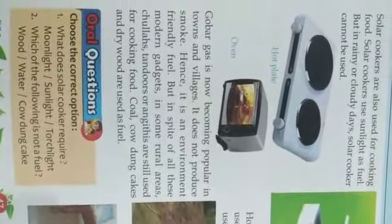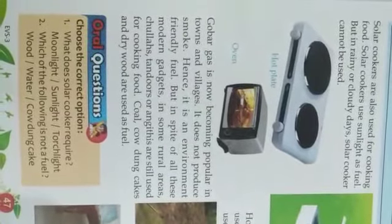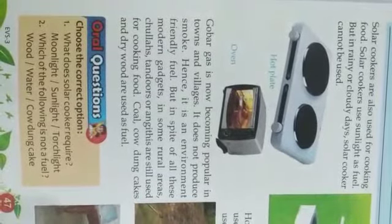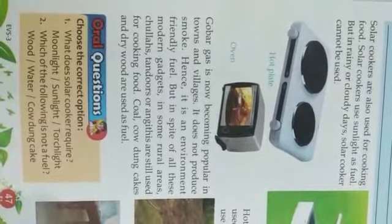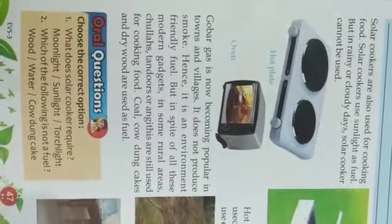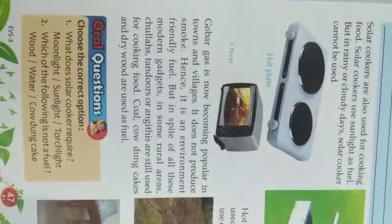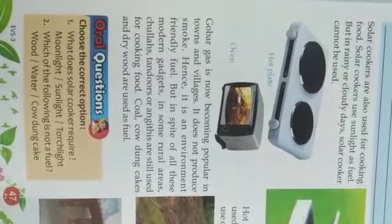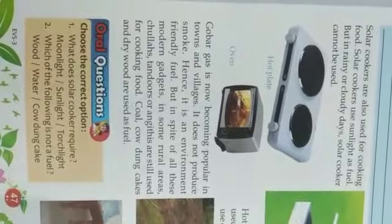But in spite of all these modern gadgets, in some rural areas, chulha, tandoor, and angithi are still used for cooking. Cow dung cakes and dry roots are used as fuel in these areas. This is a gobar gas plant.